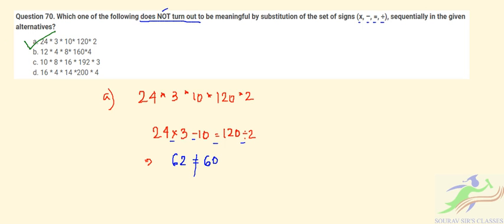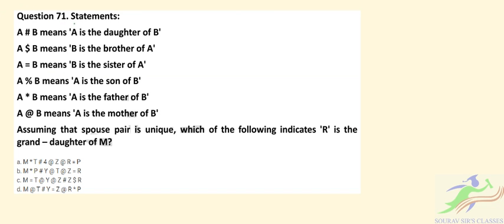Question number 71 gives these statements: A # B means A is the daughter of B; A $ B means B is the brother of A; A = B means B is the sister of A; A % B means A is the son of B; A ★ B means A is the father of B; A @ B means A is the mother of B. Assuming spouse pairs are unique, find which option indicates R is the granddaughter of M.